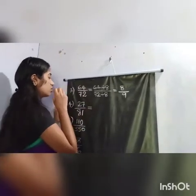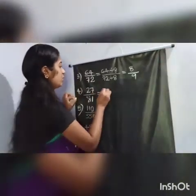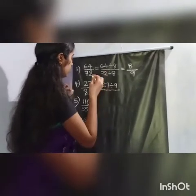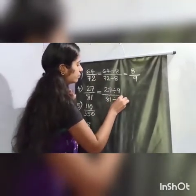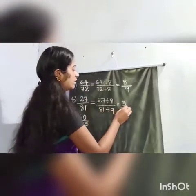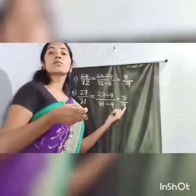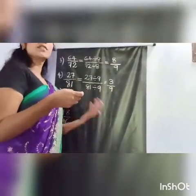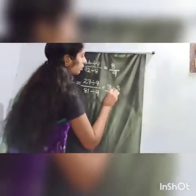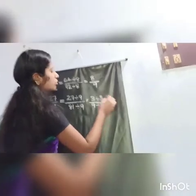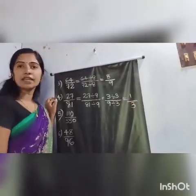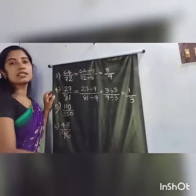Next: 27 divided by 81. We divide both numerator and denominator by 9. 27 divided by 9 is 3, and 81 divided by 9 is 9. But this is not yet the simplest form, because 3 and 9 have a common factor. So we divide again by 3: 3 divided by 3 is 1, and 9 divided by 3 is 3. Now 1 and 3 have no common factor other than 1, so 1 by 3 is the simplest form.